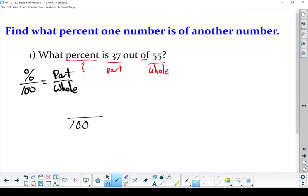Our formula always has 100 on the bottom in this part. I've got my part, that's a 37, so it's going to go on the top. My whole is 55. And the percent is the piece I'm trying to solve for. So I'm going to put an x up there. And from here, it's just cross-multiplying. I'll multiply these two together.